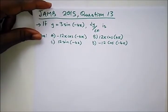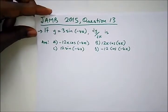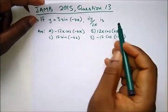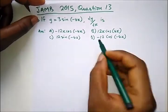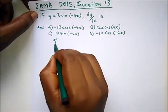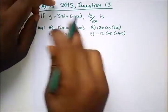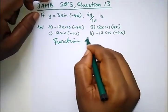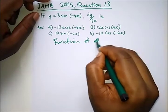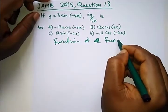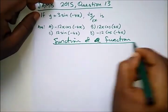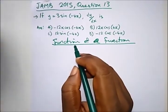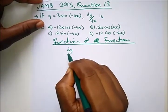Here we have a question from JAMB 2015 Question 13. It says: if y is equal to 3 sin(3 − 4x), find dy/dx. We can see this is a derivative of a function of a function — there is a function inside another function. I hope we know the formula for function of a function; if you check the introduction of this topic you'll see it.